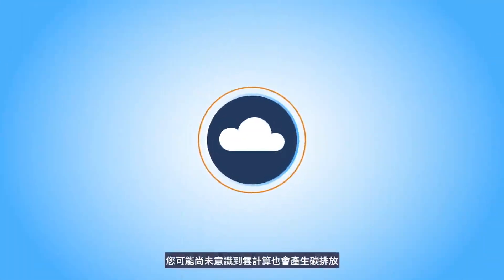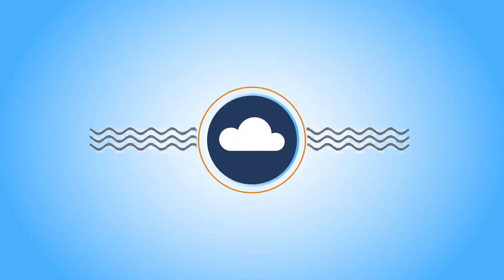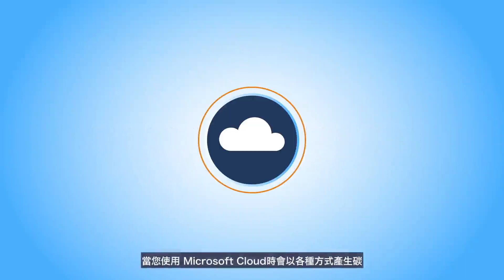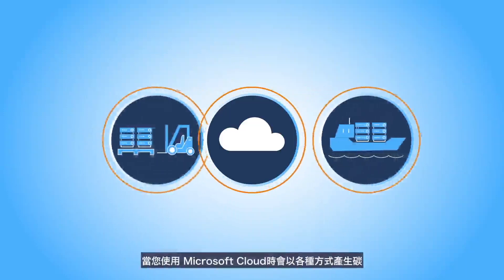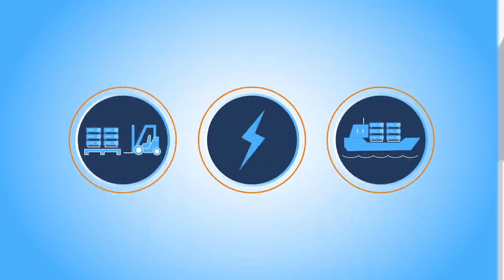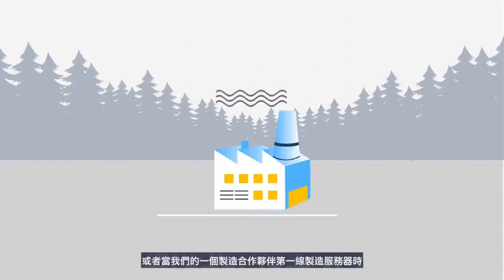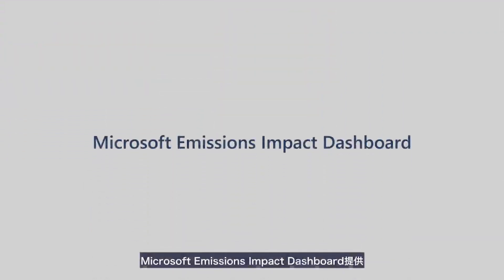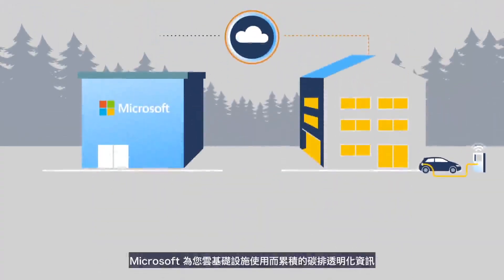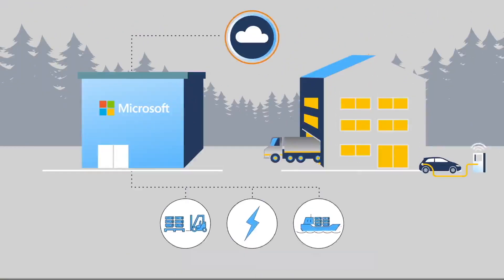You might not realize that cloud computing creates carbon emissions. When you use the Microsoft Cloud, that usage generates carbon in various ways. For example, when we transport servers, operate data centers, or when one of our manufacturing partners makes the servers in the first place. The Microsoft Emissions Impact Dashboard provides transparency into carbon emissions that Microsoft accrues on your behalf for your cloud infrastructure use.